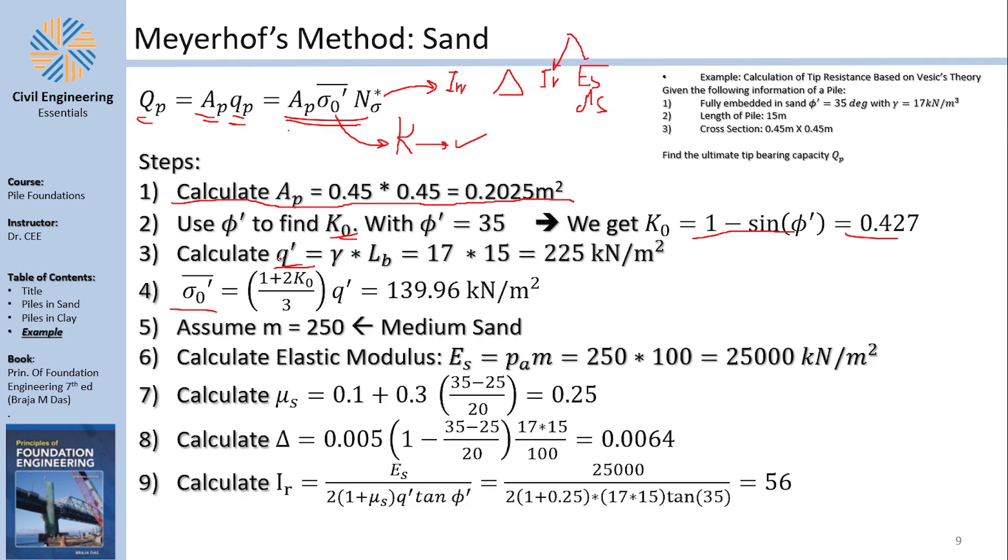Now you can calculate the average stress, which is the vertical stress plus the two lateral stresses divided by three. And you can take q' as a common factor, which gives you this equation. So you have the value here.